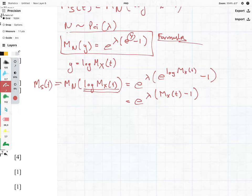We then know that our answer is as follows. We just needed to write it in an expression of the moment generating function of x. So we have exponential lambda times Mx(t) minus 1.